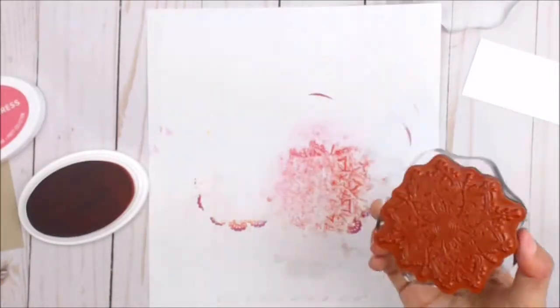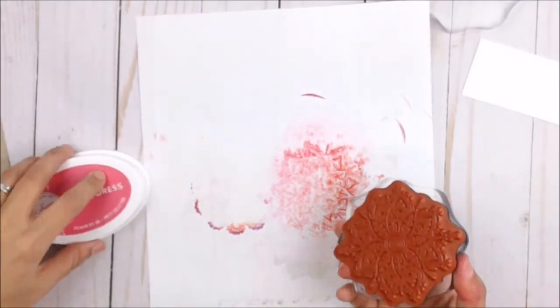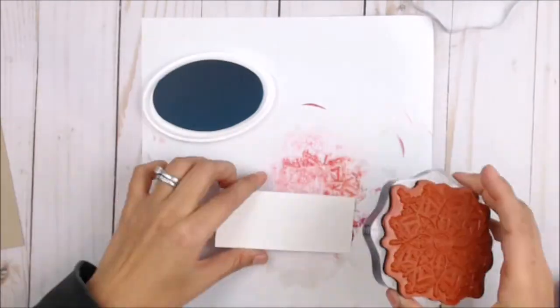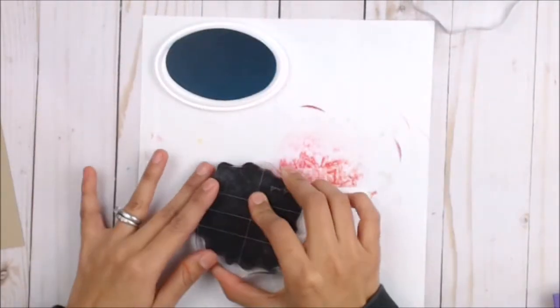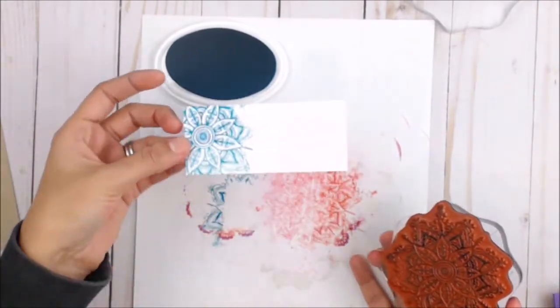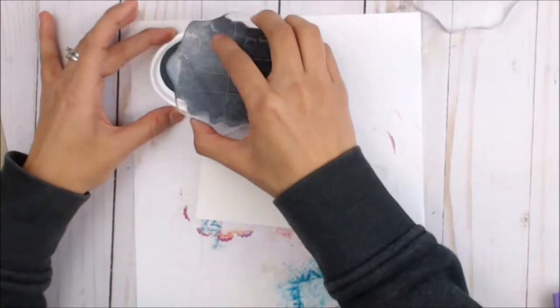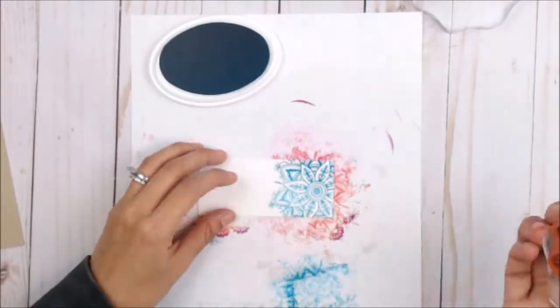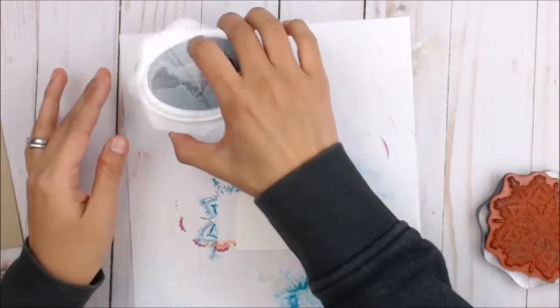And then I'm going to proceed to clean that off and move on to my blue color. As you can see, I kind of missed a spot there, so I'm going to go ahead and just turn it around and restamp, and that works.